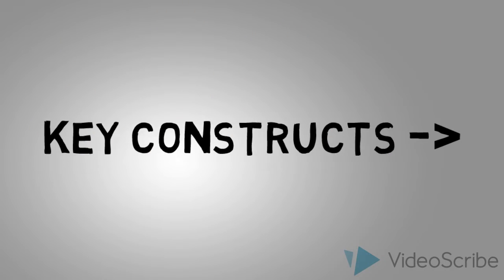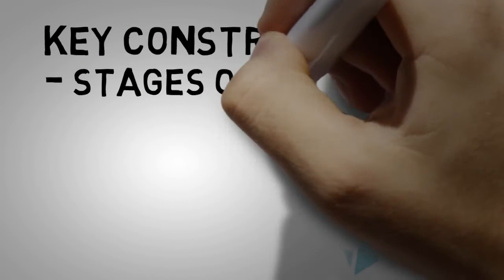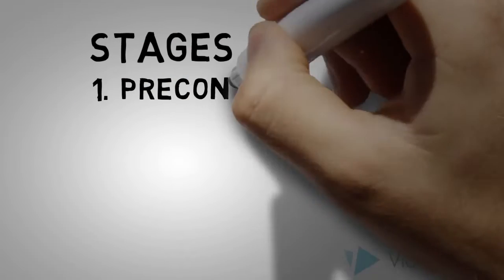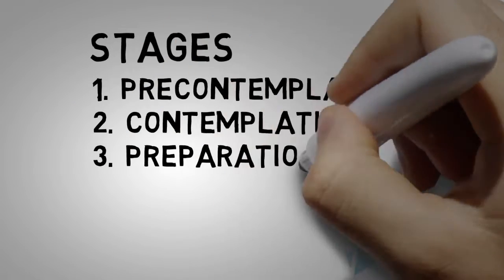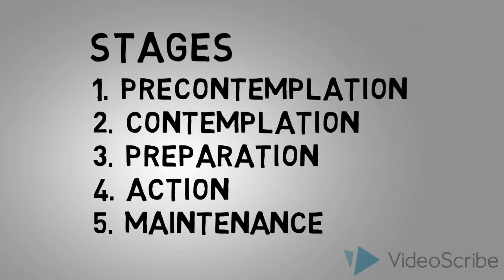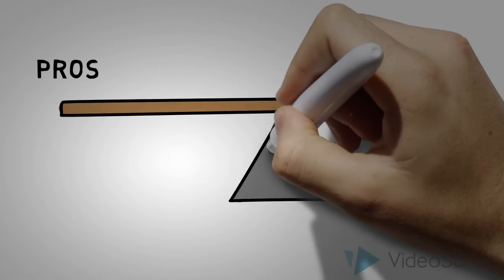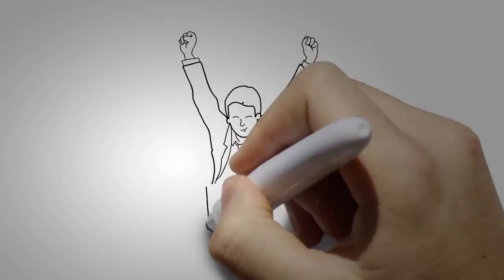It consists of four key constructs: stages of change, processes of change, decisional balance, and self-efficacy. The stages of change are pre-contemplation, contemplation, preparation, action, and maintenance. The processes of change are 10 techniques used to help individuals process through the stages. Decisional balance is the weighing of pros and cons, and self-efficacy is the individual's belief that they can change their behavior.